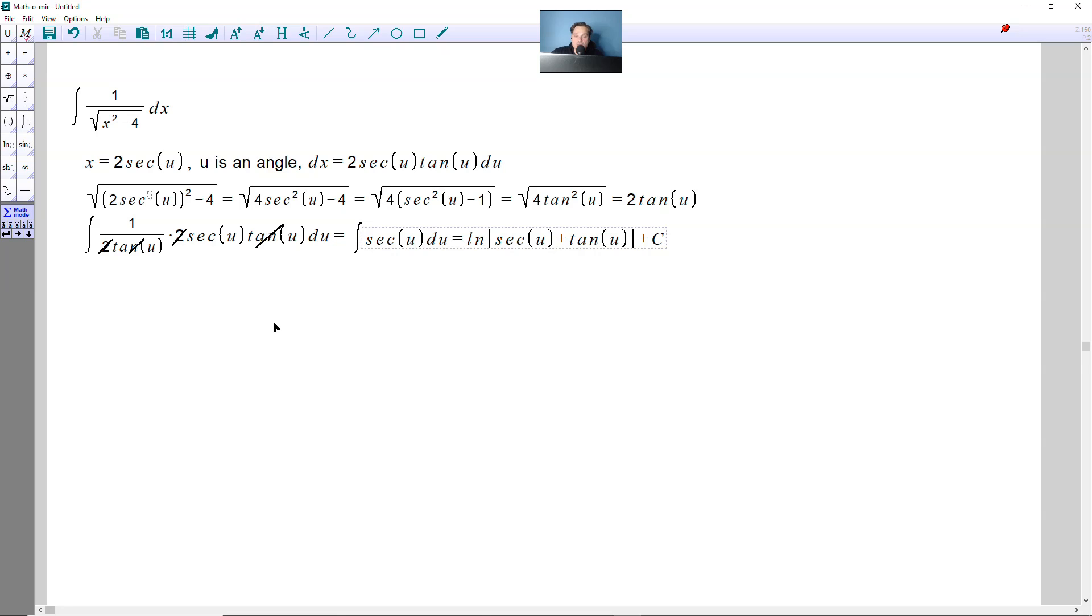Now the last part that remains is to replace secant of u and tangent of u, so what we need to do is make a triangle. Let's make a triangle that looks like the following. And then here remember that u is an angle, so u goes in this position.